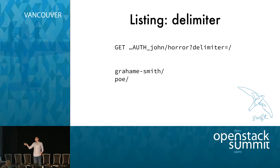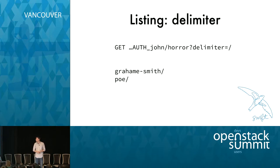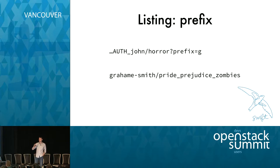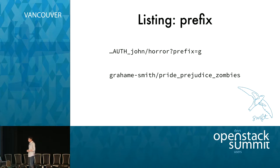You can also use a delimiter — an arbitrary character that gives you pseudo-directories. Since Swift doesn't support nested containers, you can put slashes in object names and use delimiter=/ to make listings look like directories, grouping by author like 'GramSmith' and 'Poe'. Combine that with a prefix to walk into a pseudo-directory — for example, prefix=P returns anything starting with P, like Pride and Prejudice and Zombies.